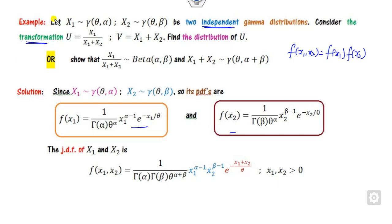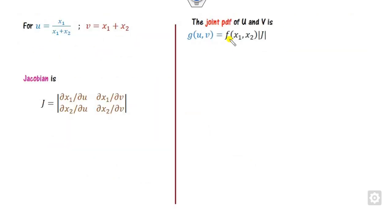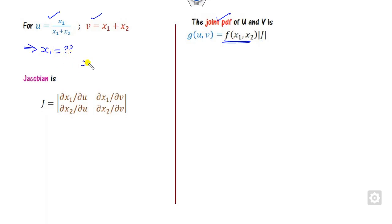As we discussed in our last class, since we have transformations, you have to find the joint density function using the Jacobian. The transformations are given here. Your target is to find the values of x1 and x2 so that you can compute the Jacobian.